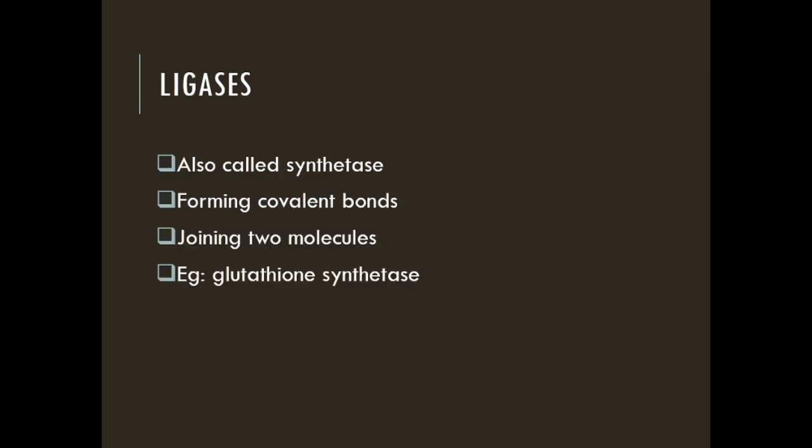The sixth and last class is ligases, also known as synthetase enzymes. Ligases form a relatively small group of enzymes that involve the formation of a covalent bond joining two molecules together — acting as a molecular glue. Two molecules are joined to form a single molecule. An example is glutathione synthetase. These enzymes are involved in synthesis reactions, joining two molecules to form a new compound.